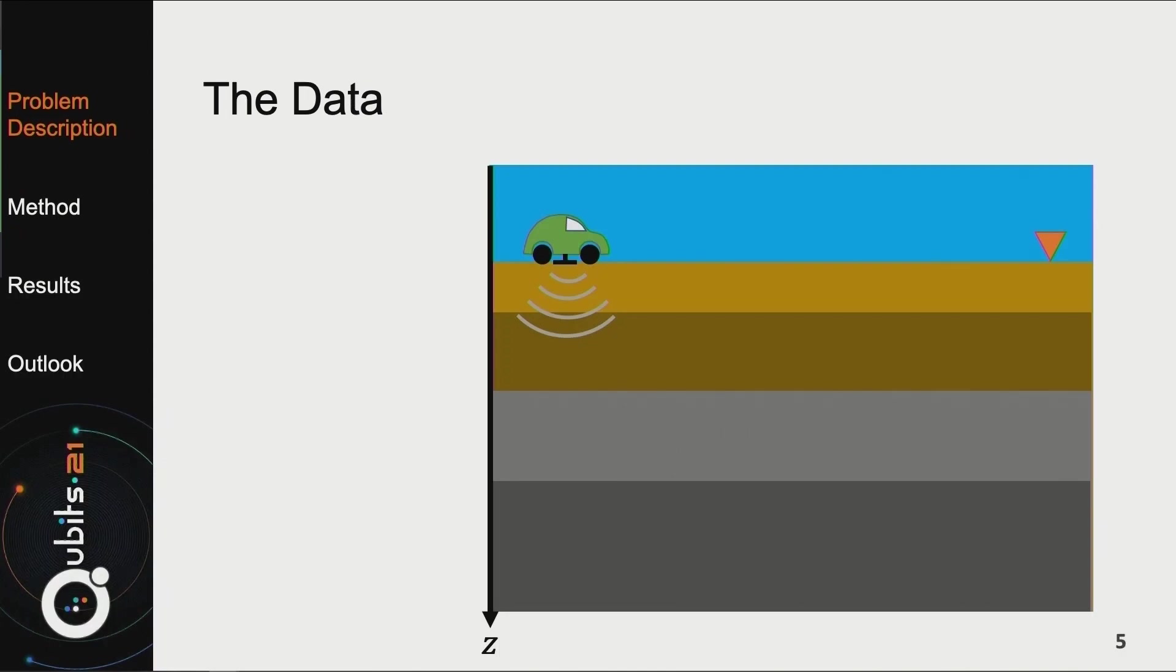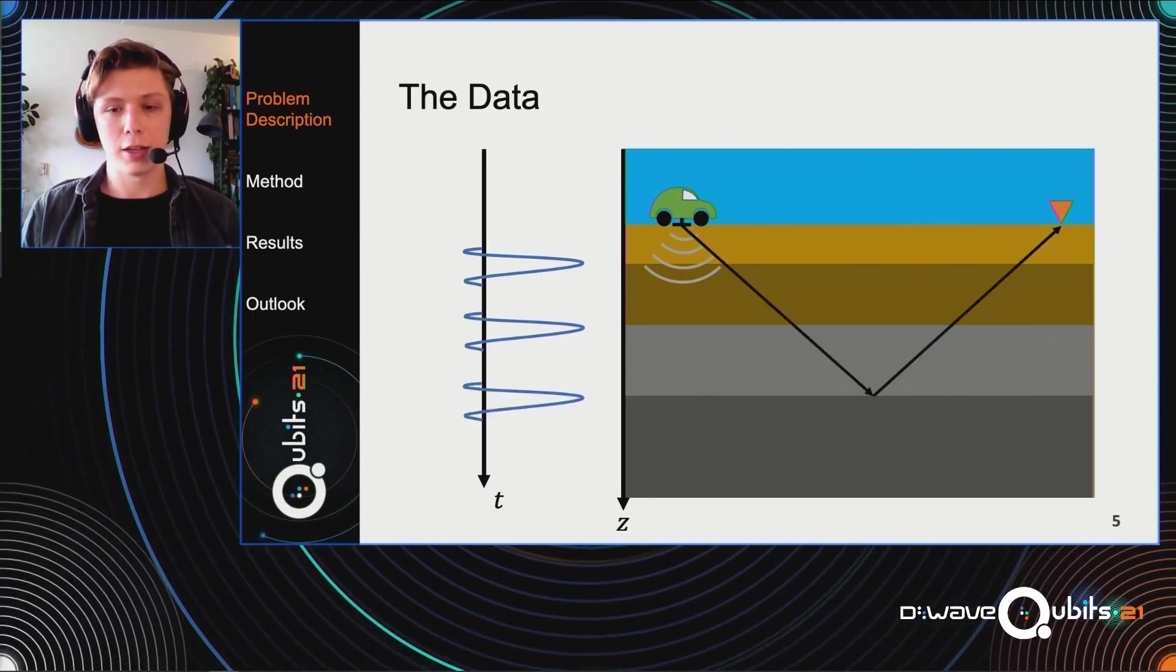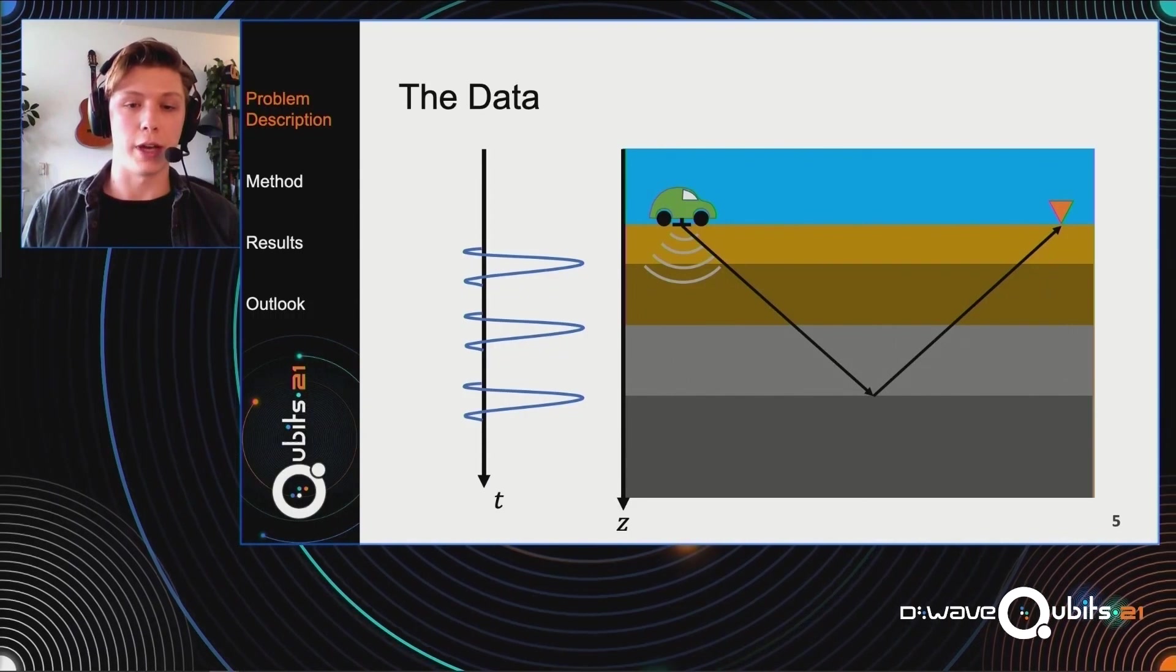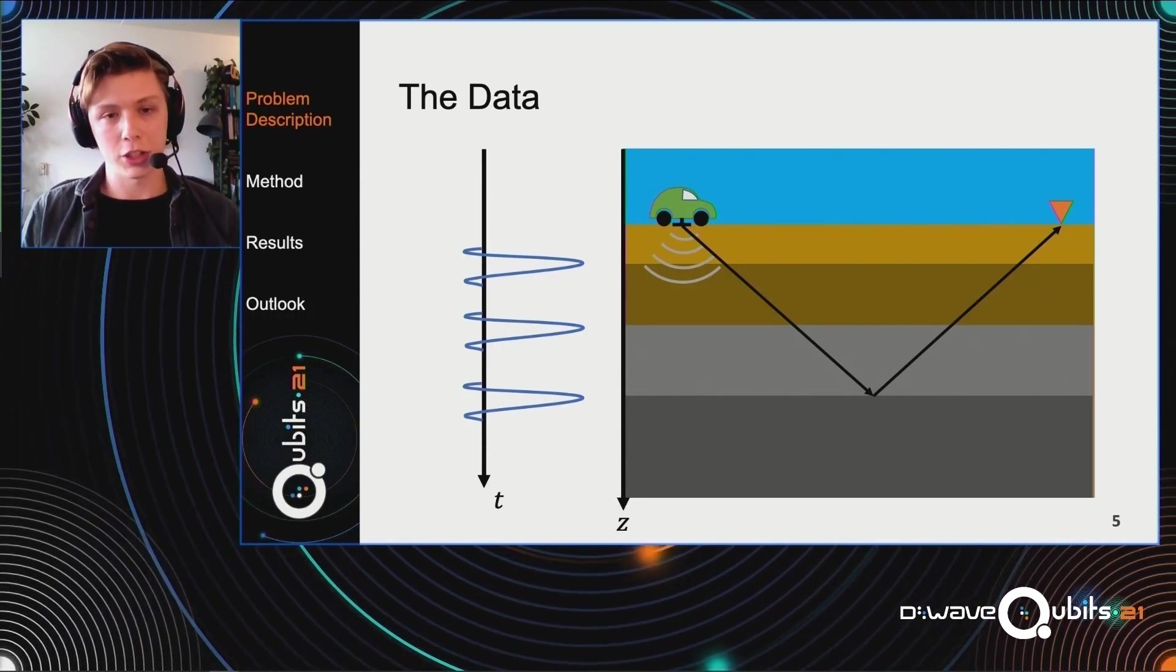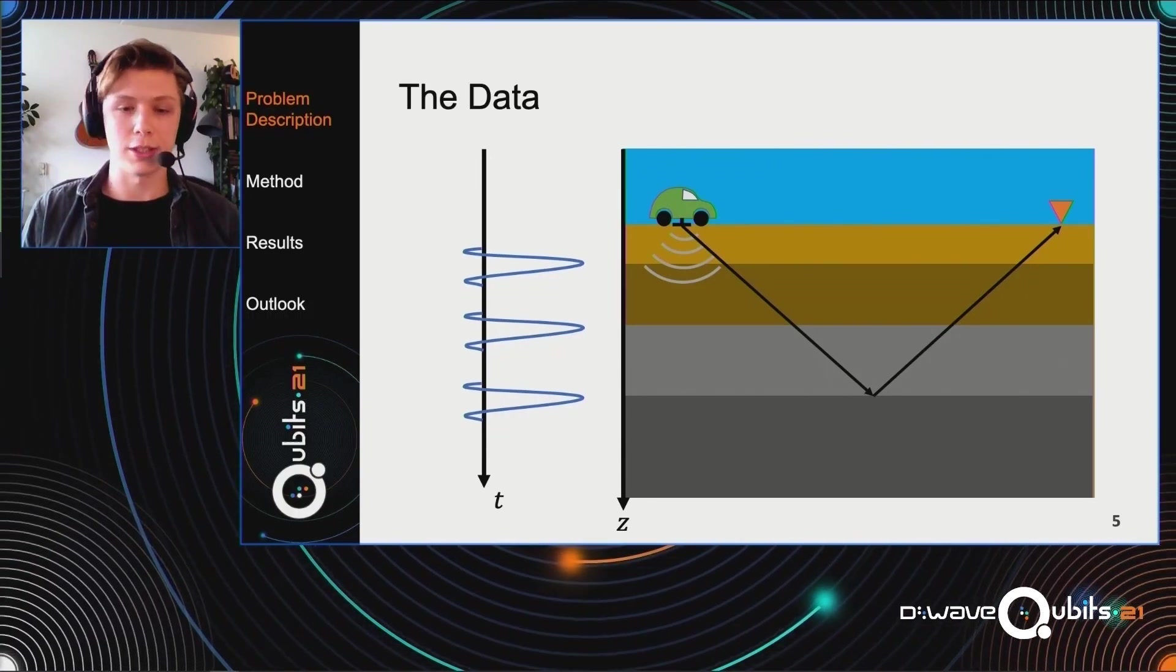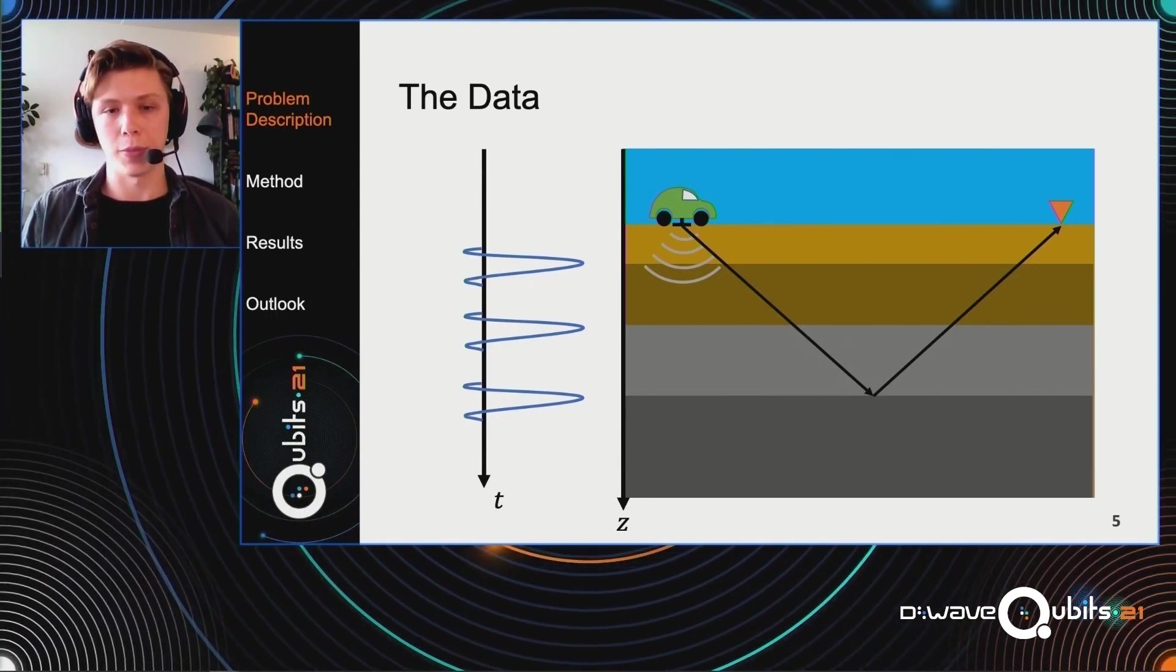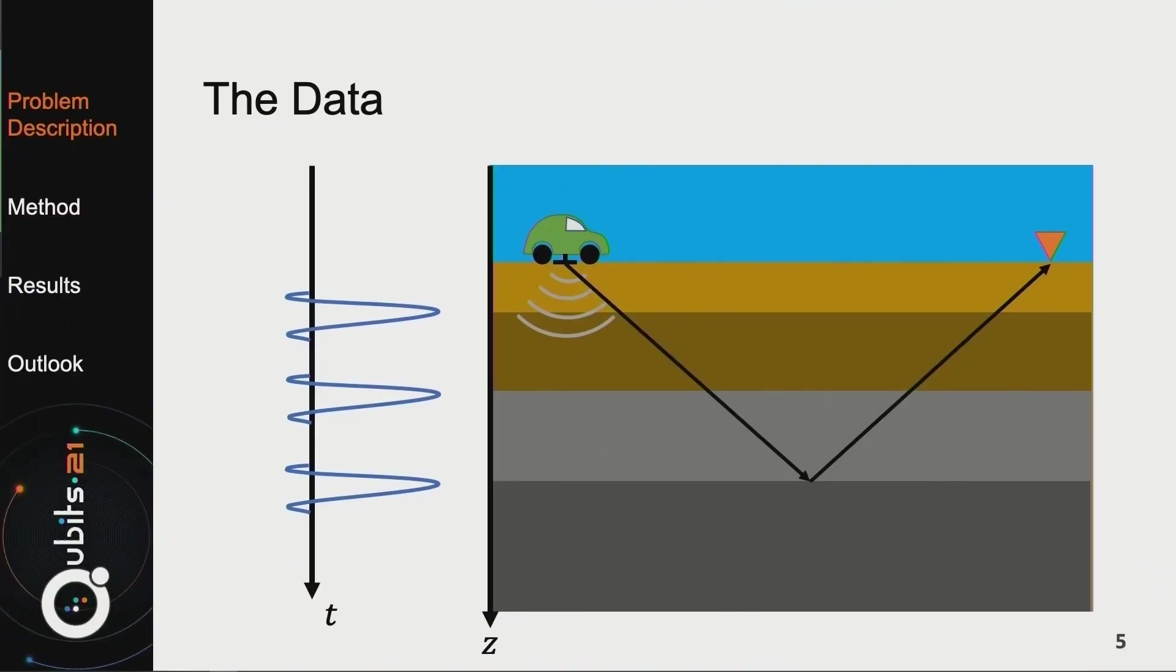But what does this data actually look like? Here, I've drawn another seismic experiment with one car and one receiver. On the left, I'm going to show the data that we get. When this car now moves, the first subsurface interface will give a wave in the data. A little bit later, the one from the second subsurface interface will be present, and then the third one. In this way, we get a nice wave for every subsurface layer. The signal on the left is what's called a trace. What is very important is that this trace is in the time domain, whereas the depth of the earth is in the distance domain. There are some well-established ways to go from this time domain to the distance domain.